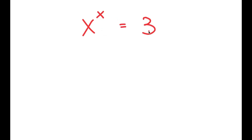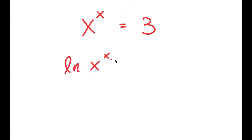Now in this video, I'm going to solve the equation x to the power of x is equal to 3. To solve this, I'm going to first start by taking the natural log on both sides. So I get ln of x to the power of x is equal to ln of 3.